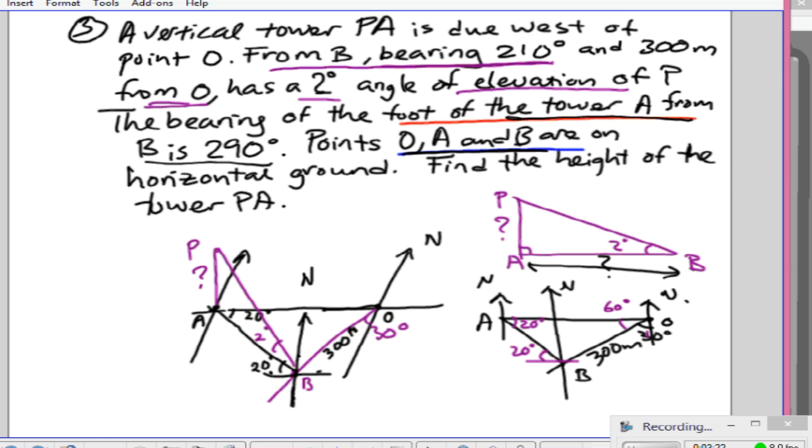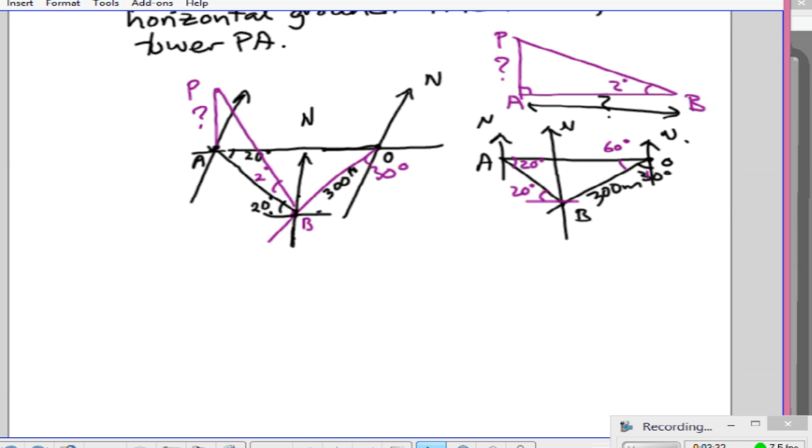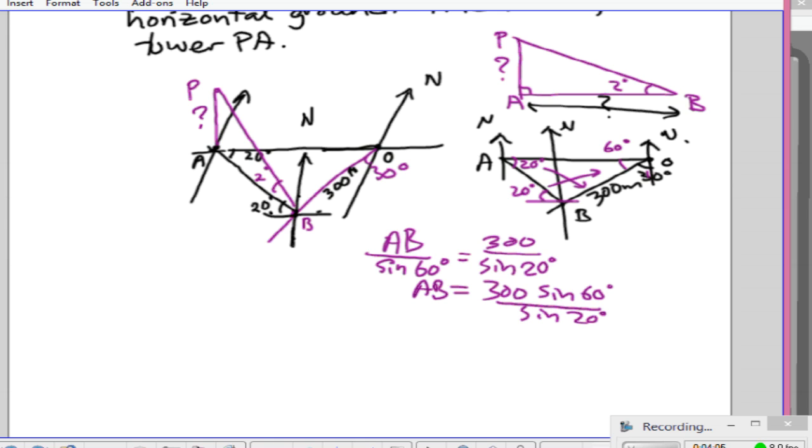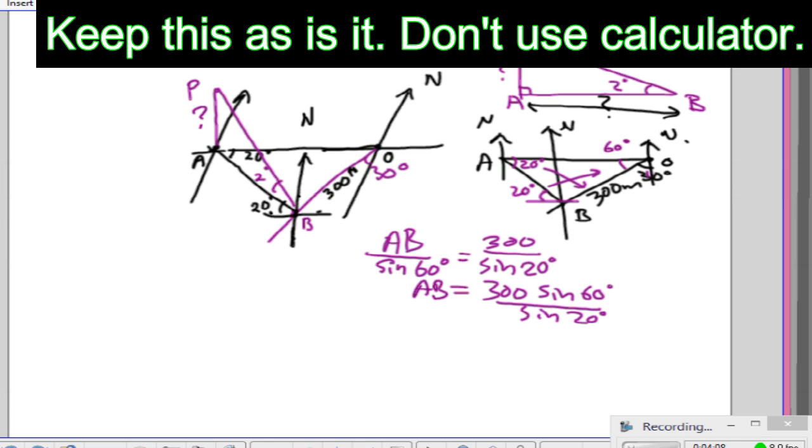And I can now use sine rule to calculate my answer AB. So using sine rule, AB is over sine 60 is equal to 300 is over sine 20 degrees. There is no point of calculating this using GDC at this stage because AB is not our final answer.